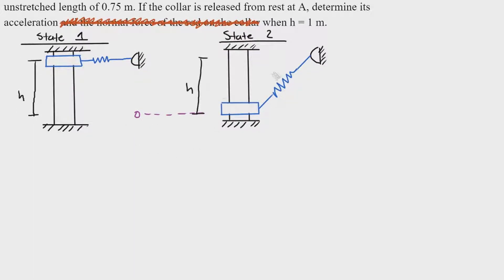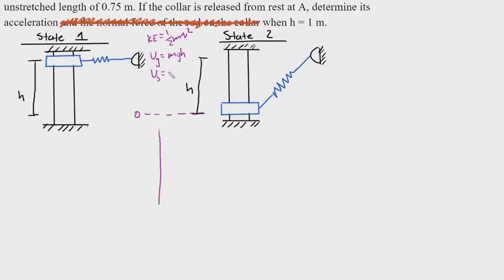Before we go ahead, we need to know a few things about energy. Kinetic energy is defined as one-half mv squared. Gravitational potential energy is defined as mgh, and spring potential energy is defined as one-half k x squared. These are derived from the work-energy principle, which itself is derived from F equals ma.